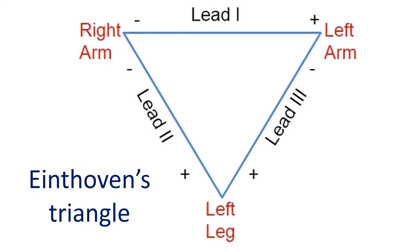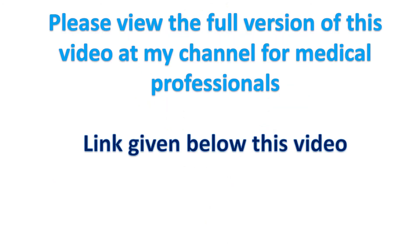Electrode combinations for limb leads are as follows: Lead 1 — left arm positive, right arm negative; Lead 2 — right arm negative, left foot positive; Lead 3 — left arm negative, left foot positive.